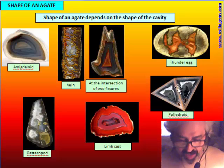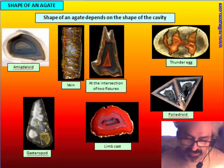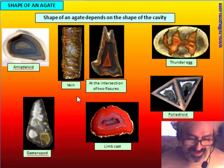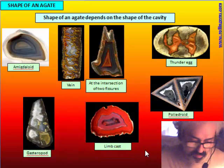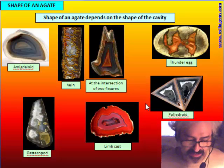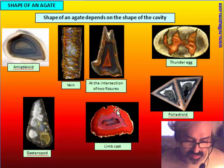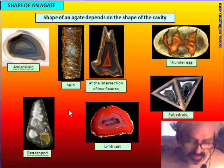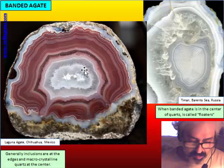These agates can be 5–10 cm up to 40–50 cm in size and are quite abundant. Another very common shape is the limb cast — the filling of the cavity left by a cast of a tree branch. A small piece of tree cannot fossilize, so the organic matter disappears, leaving a void that agate fills with banded chalcedony. A gastropod fossil can also provide a cavity for an agate.